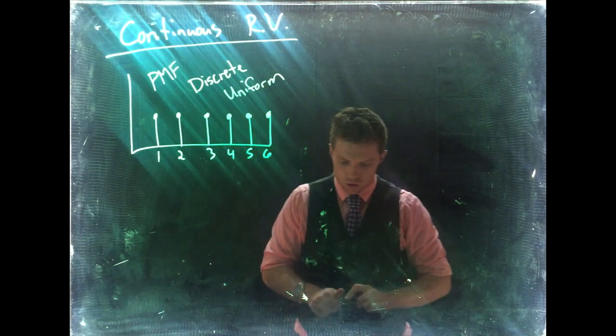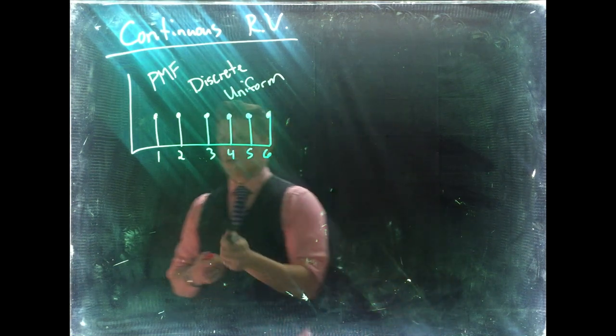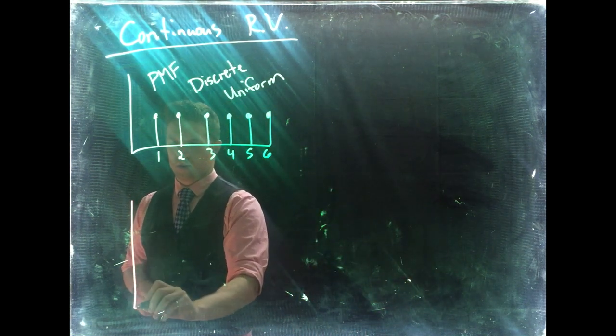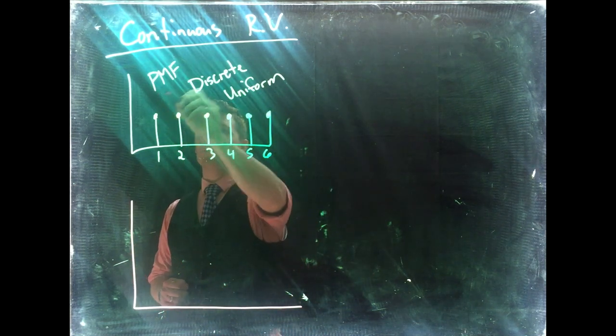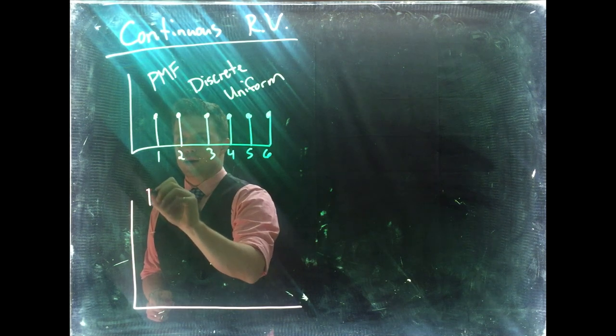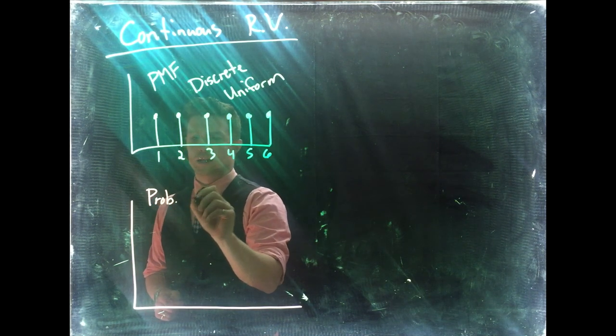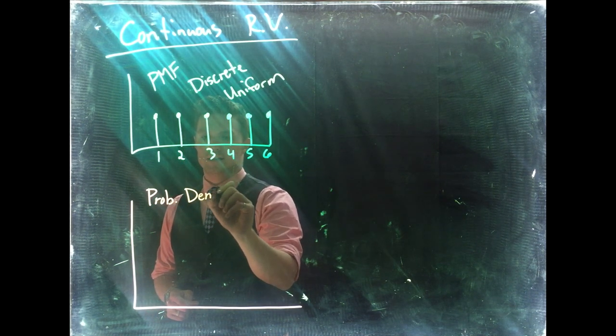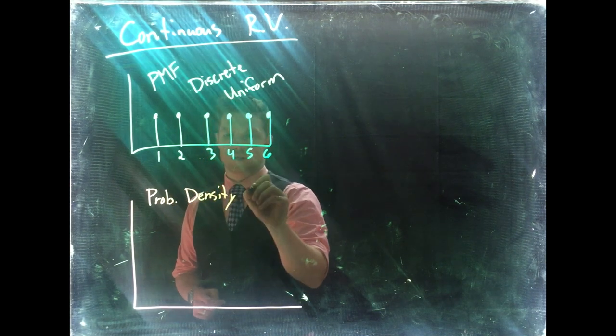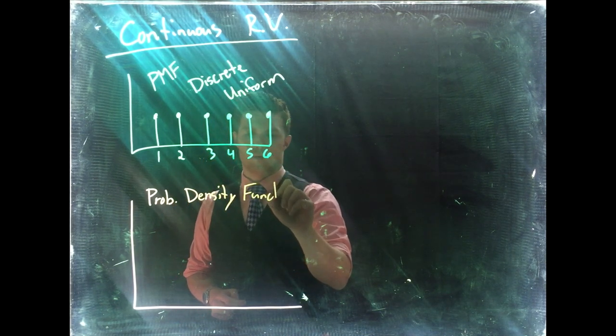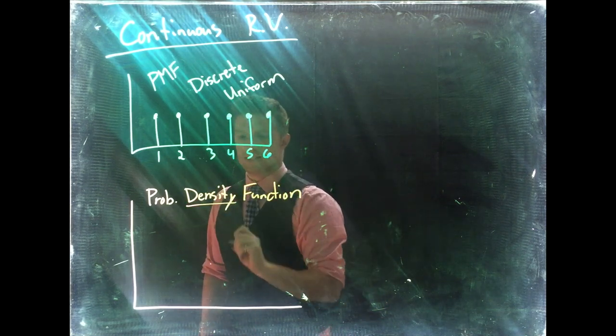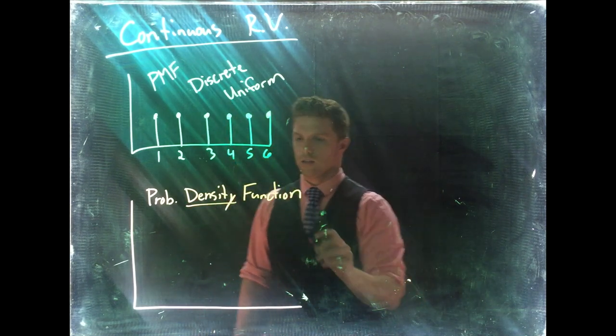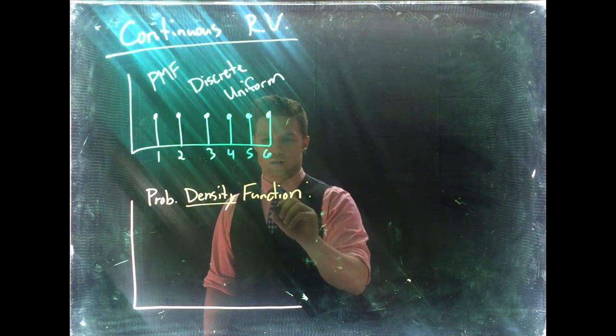Okay so I'm going to take an analogous sample and look at continuous uniform. So we're going to not, instead of using probability mass we're going to use probability density function. Okay and we're going to come to this word density in just a second and this is going to be of a uniform.